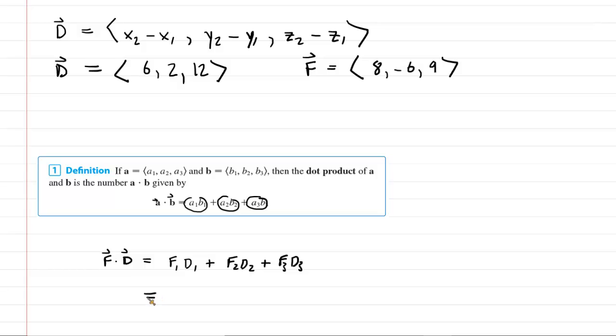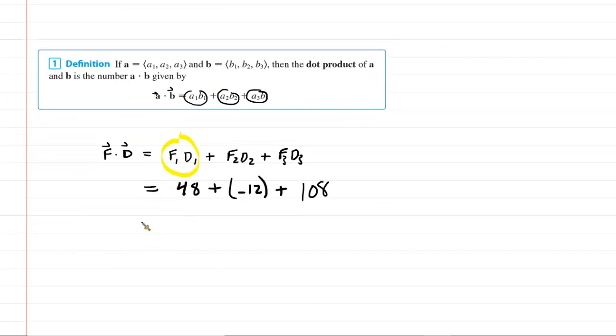This is going to give us the value of the work. So when we say f1 times d1, what we mean is just to multiply the x coordinates of those two vectors. So 8 times 6 is going to give us 48. And then we're going to add that to f2 times d2, which is negative 6 times 2, that's negative 12. And then we add f3 times d3, which is 9 times 12, giving us 108. So if we pick up our calculators, we can figure this out. This is going to be 144.